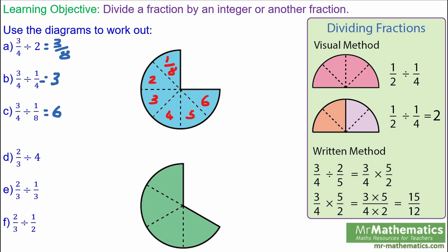Moving on to question D. We're going to do two thirds divided by four. Here you've got two thirds of an entire circle, and we're going to split this into four equal sectors. Each one is one sixth of the entire circle, so two thirds divided by four is going to be one sixth.